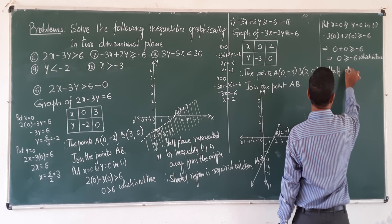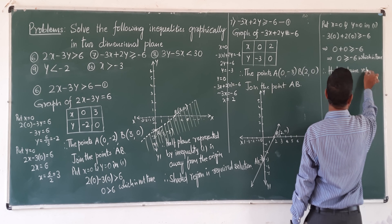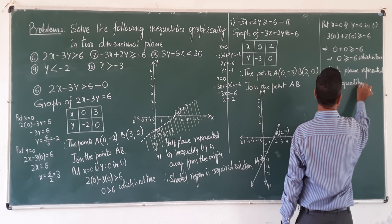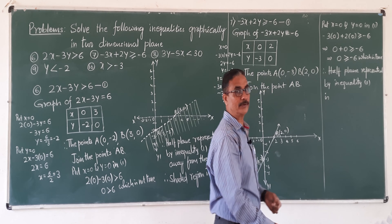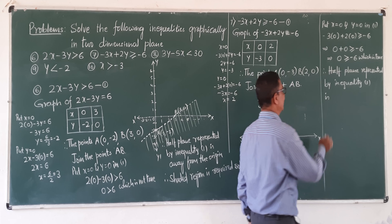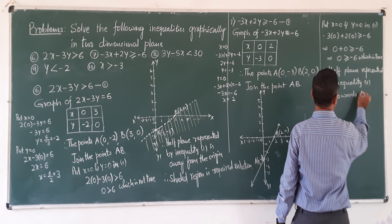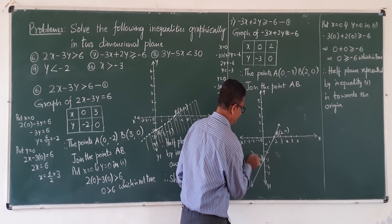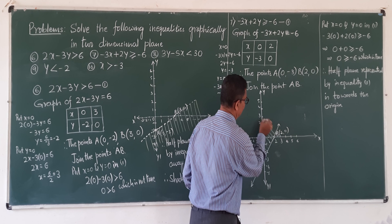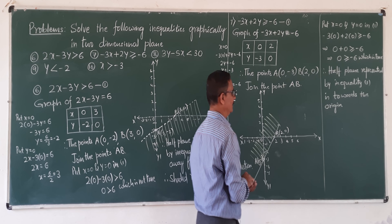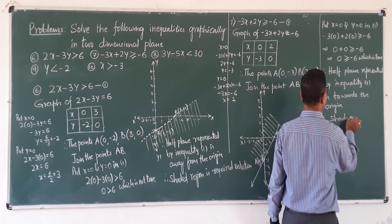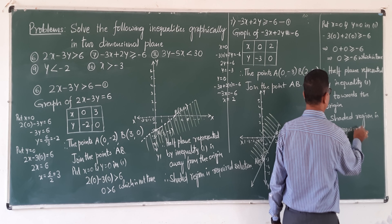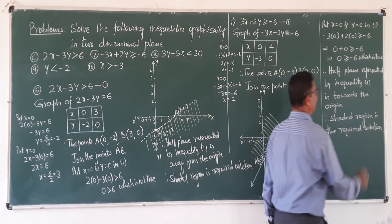Therefore, the half plane represented by the given inequality is towards the origin. Towards the origin. Therefore, the shaded region is the required solution of the inequality.